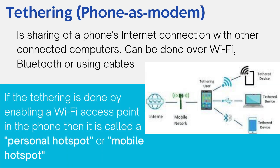The final computer network model is tethering, also called the phone-as-a-modem model since a phone is always involved as a network enabler. Tethering is where a phone's internet connection is shared with other connected computers. It can be done over Wi-Fi, Bluetooth, or using a cable such as a USB cable. If tethering is done by enabling a Wi-Fi access point on the phone, it is called a personal hotspot or mobile hotspot. Mobile data charges apply to data passed through the tethered network, and the phone battery will drain faster since the phone works as an access point.